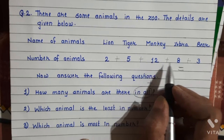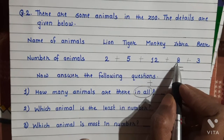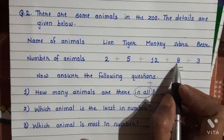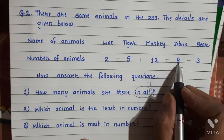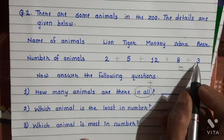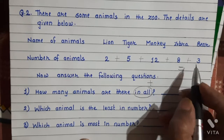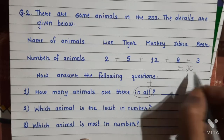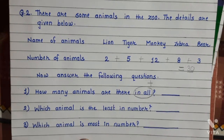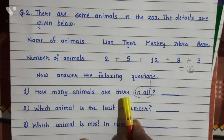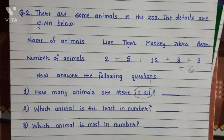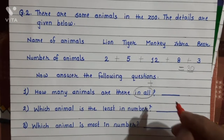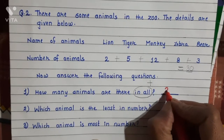19 — keep it in your mind. 8 — take on your fingers, count 8 after 19, we will get 27. Then 27 after count 3: 28, 29, 30. So how much do we get? Number 30. So how many animals are there in all? We are writing the answer: 30. Total 30 animals are there in the zoo.